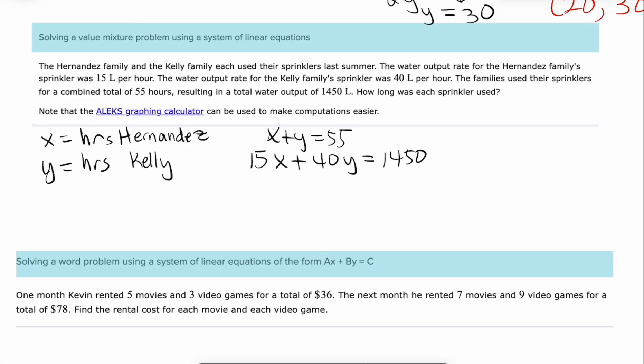And now we can just use what we know about systems of equations, whatever method you want. Let's rearrange this one and say that y equals 55 minus x and let's substitute in right here. So we get 15x plus 40 times the quantity 55 minus x equals 1450. Distribute the 40 to both things in your parentheses. 40 times 55 is 2200. 40 times negative x is negative 40x. Now let's simplify this as much as we can.